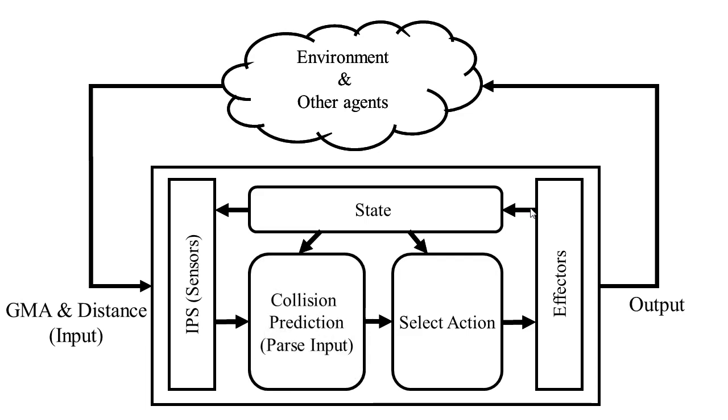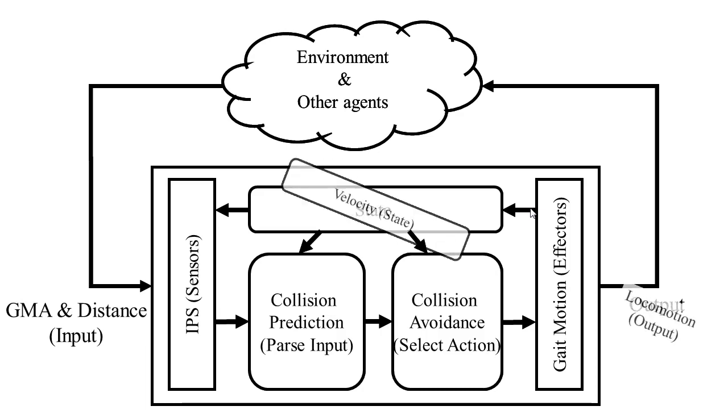For the given GMAs and distances, the observing agent predicts collision with others. A proper collision avoidance behavior is selected if necessary. The selected action is executed by gait motions that determine the velocity of the observing agent, moving direction, and moving speed. The actual locomotion of the agent affects other agents finally.